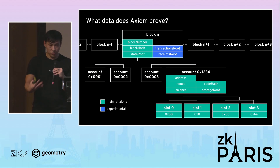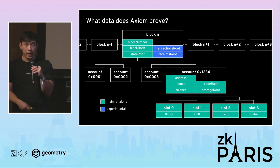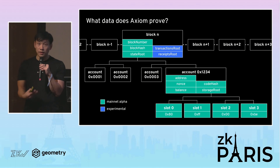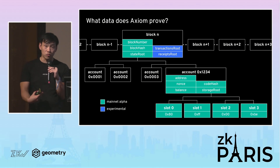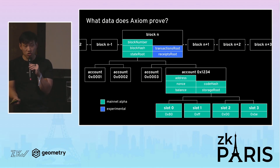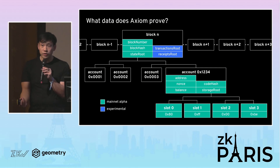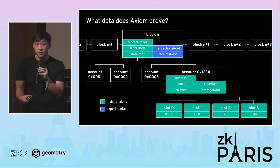In every Ethereum block we have the block header — the block number, block hash, and commitments to the state, transactions, and receipts. On mainnet, we allow you to prove any property of an address: the nonce, balance, code hash, or storage root through an account proof, or any storage slot into the storage root of any address. And this week, we just launched on testnet proofs into any historic transaction or receipt in the history of Ethereum.